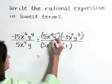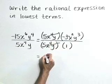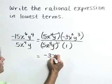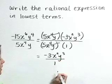Now let's cancel common factors. This gives us negative 3x squared y to the third over 1, or let's just write that result as negative 3x squared y to the third.